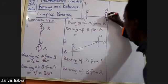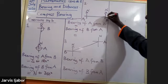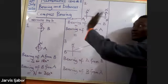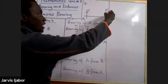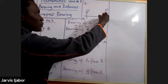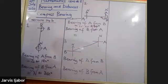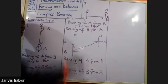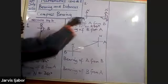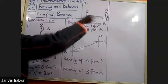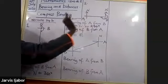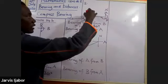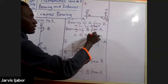Question two — bearing of A from B: B is the reference point and A is on my left-hand side, which is west. So the bearing is west, or 270 degrees. The bearing of B from A: I look to my right, which is east, so the bearing is east, or 90 degrees.